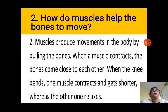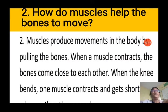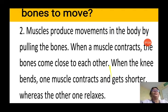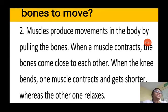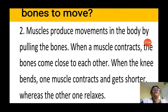Question 2: How do muscles help bones to move? Muscles produce movement in the body by pulling the bones — muscles cannot push bones, they only pull. Muscles work in pairs. When a muscle contracts, the bones come close to each other. When the knee bends, one muscle contracts and gets shorter while the other relaxes. If one muscle contracts, the other side relaxes.